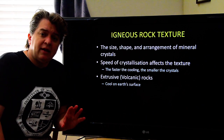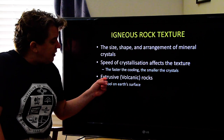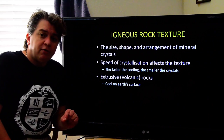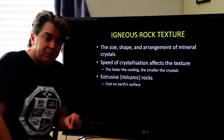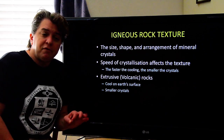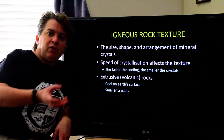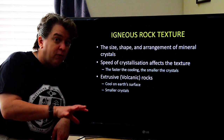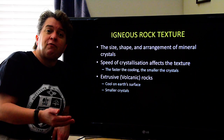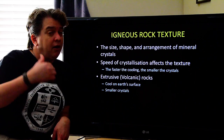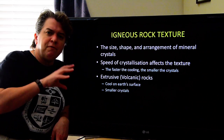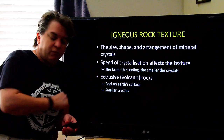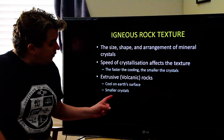In a very basic sense, we can break igneous rocks into two types. We have the extrusive or volcanic rocks, which form on Earth's surface and have smaller crystals, because that magma was erupted onto Earth's surface. Earth's surface is very cold for rocks — most magma is 600 to 1400 degrees Celsius — so it cools down really quickly once it reaches the surface, resulting in smaller crystals.